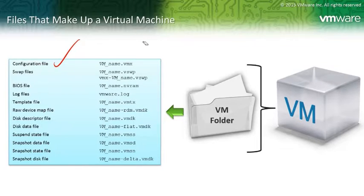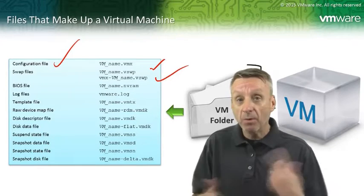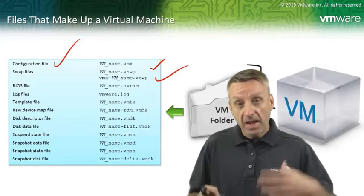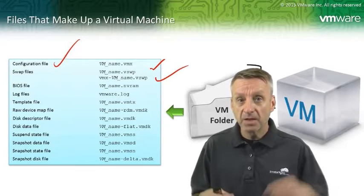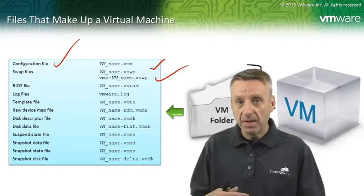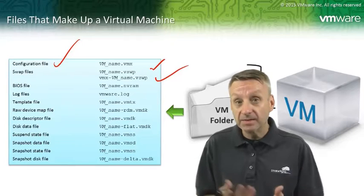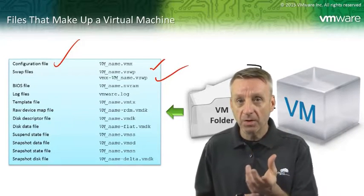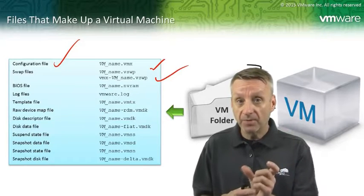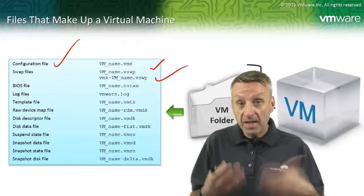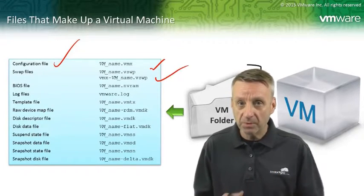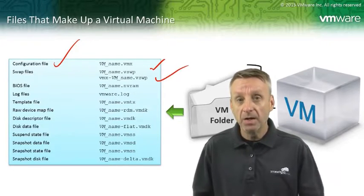Among the other files are the swap files. There are two: a vswap file and a VMX.vswap file. These are dynamic files — they get created when we power the virtual machine on and go away when we power it off. These are VMware's get-out-of-jail-free card: if there is a lot of contention for memory resources on the ESXi host, the VM kernel has to be able to swap out the entire memory space of that virtual machine. For example, if a VM has 2 GB of memory assigned, the vswap file is created at 2 GB in size. Performance will be noticeably slow if you reach that point — you've over-committed memory.